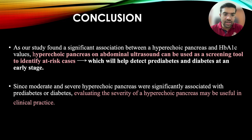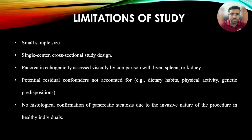Conclusion. Our study found a significant association between hyperechoic pancreas and HbA1c values. Hyperechoic pancreas on abdominal ultrasound can be used as a screening tool to identify at-risk cases and detect pre-diabetic and diabetic individuals at an early stage. Since moderate and severe hyperechoic pancreas were significantly associated with pre-diabetes and diabetes, evaluating the severity of hyperechoic pancreas is also helpful in clinical practice. The main limitation of our study was its single-center cross-sectional study design.